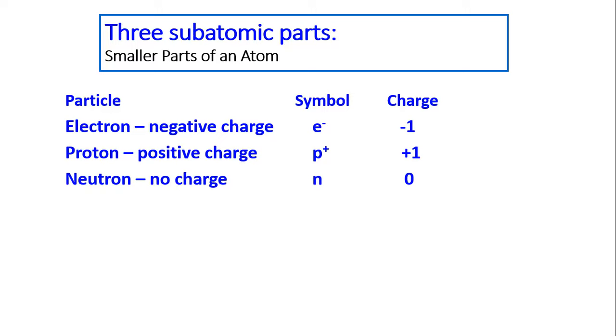A proton has a positive charge. Its symbol is p plus, and its charge is positive one. A neutron has no charge. Its symbol is n. Charge is zero.